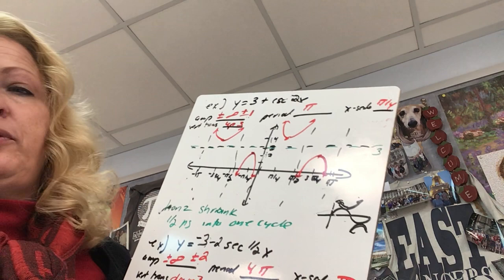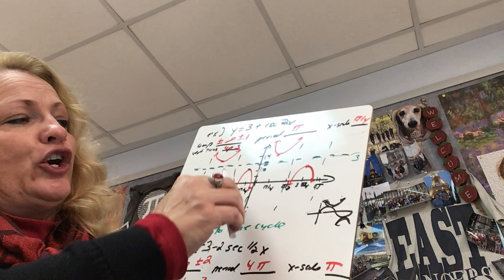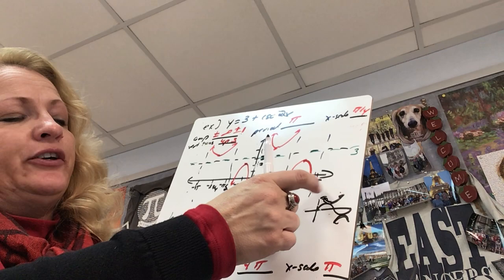Comparing this to the parent graph: it was moved up three, and it has a horizontal shrink because the period is pi. Since the parent graph has a period of two pi, I could fit half of a parent graph into one cycle of this.